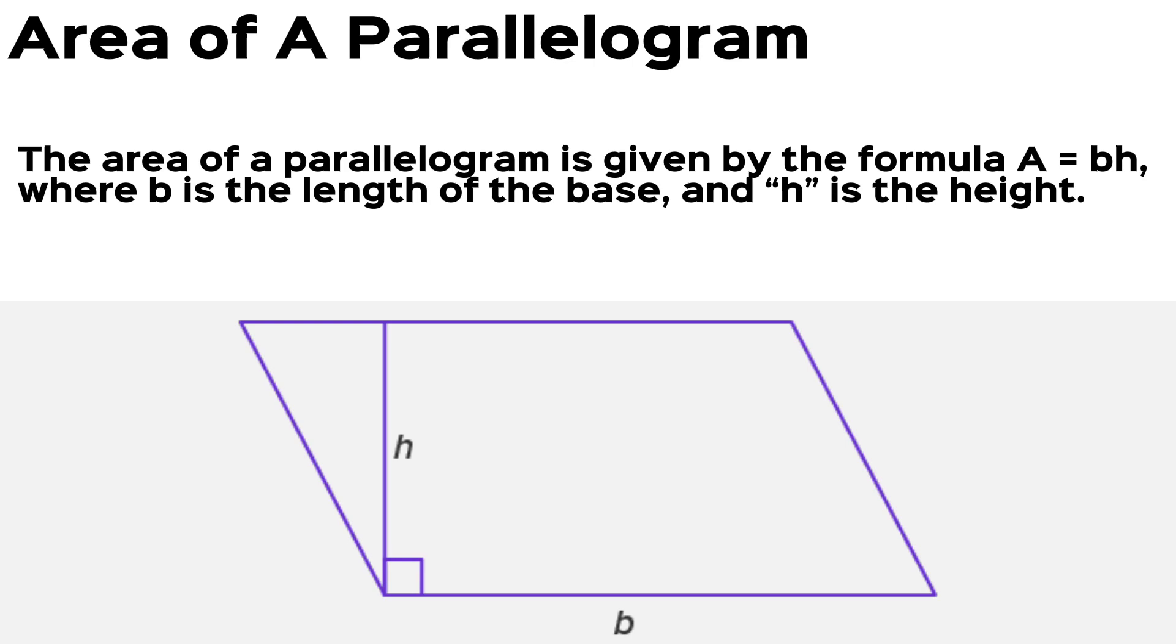Area of a parallelogram. The area of a parallelogram is given by the formula A equals B times H, where B is the length of the base and H is the height.